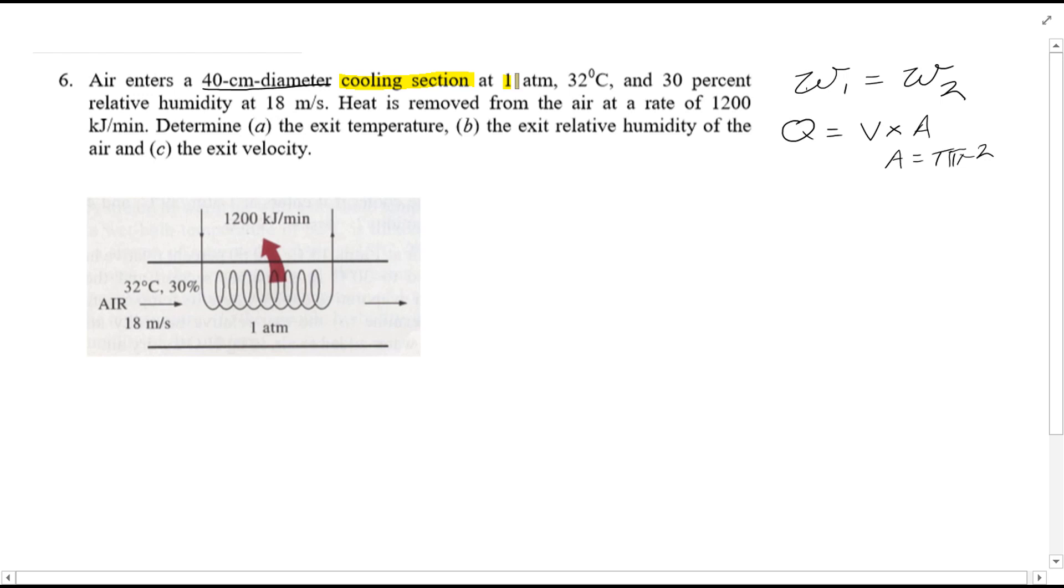We're also given in the question 1 atm, so you should be thinking about the psychrometric chart from page 46 of the thermo property tables. We're given the temperature on entry, relative humidity on entry, and 18 meters per second. You're also given the rate of heat removed from the air, 1200 kilojoules per minute, and you're asked to find the exit temperature, exit relative humidity of the air, and the exit velocity.